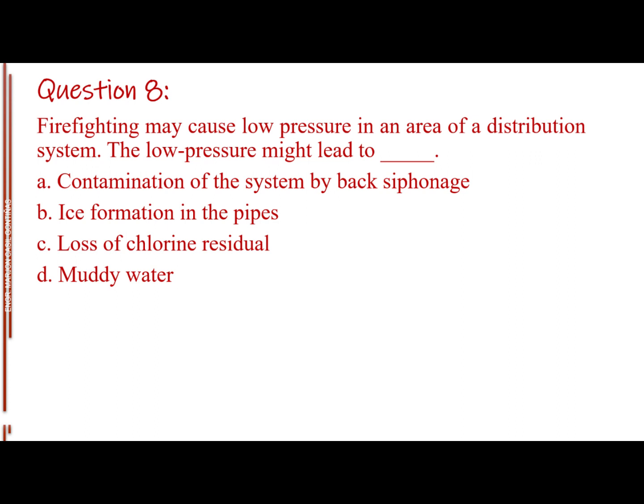Question number 8. Firefighting may cause low pressure in an area of a distribution system. The low pressure might lead to blank. Letter A, contamination of the system by back siphonage. Letter B, ice formation in the pipes. Letter C, loss of chlorine residual. Letter D, muddy water. The answer is Letter A, contamination of the system by back siphonage.